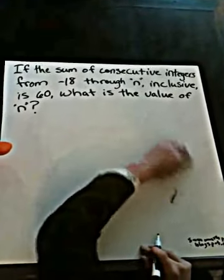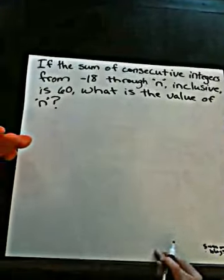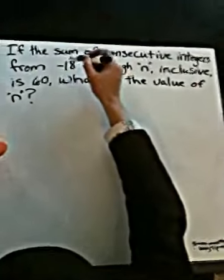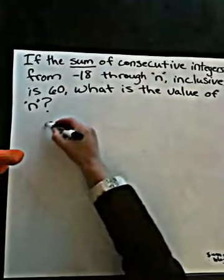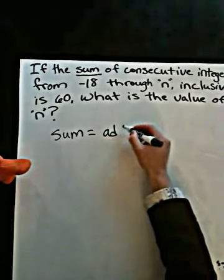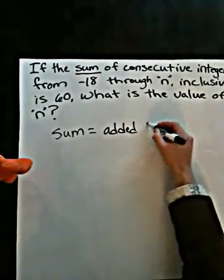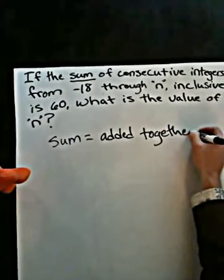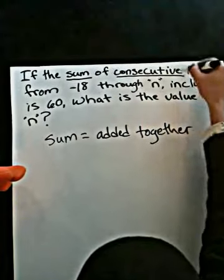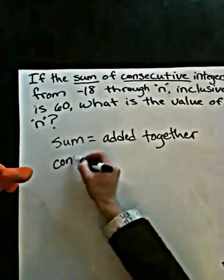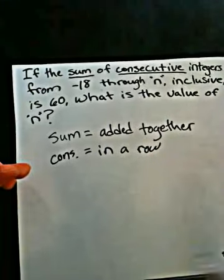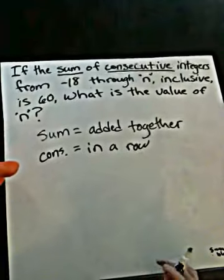But let's back up for a minute. The first thing you'll notice when looking at this problem is a series of vocabulary words. Our first one that you might be unfamiliar with is sum. Sum simply means added together. So when you see the word sum, think added together. The second one that might be confusing for you is consecutive. Consecutive simply means in a row. Very good, Professor Lucan.